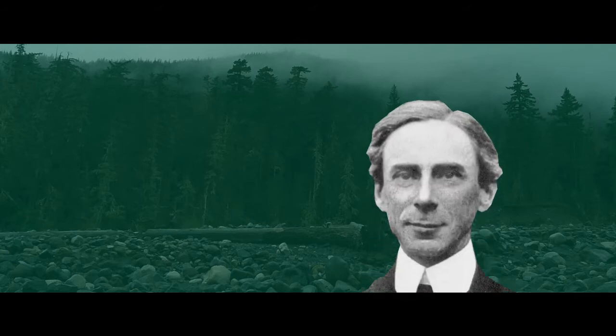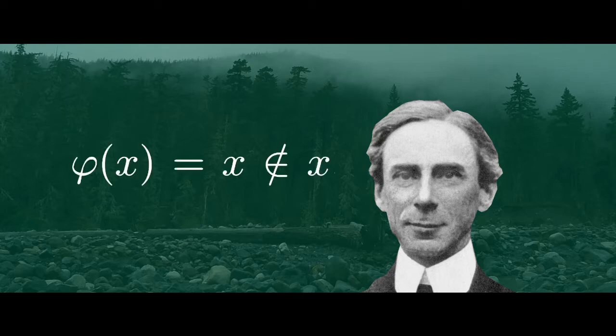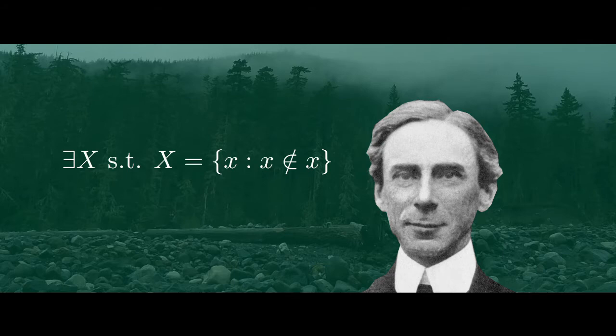Bertrand Russell, a British mathematician and philosopher, raised this argument to Frege's naive set theory. Consider the property φ(x) defined as x not being in x. That is, the property of a set not containing itself. The axiom of comprehension states that there has to exist some set such that X = all objects which don't contain themselves.